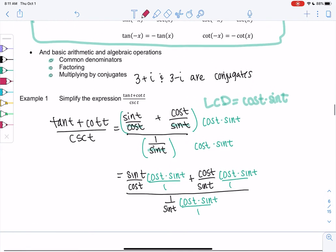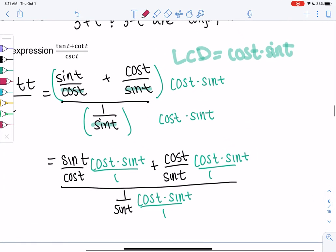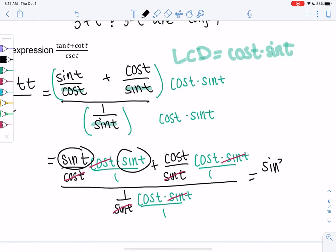So cosine and cosine cancel in the first one. Sine and sine cancel and then sine and sine. So it looks like we get sine squared plus cosine squared. That's familiar, isn't it? All over cosine.